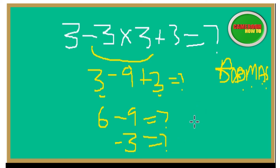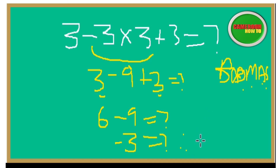6 minus 9 is negative 3. So the correct answer to 3 minus 3 times 3 plus 3 is negative 3, as I said in the introduction.